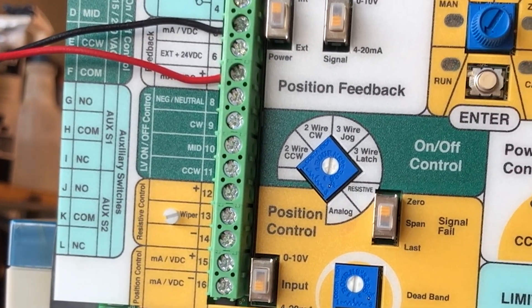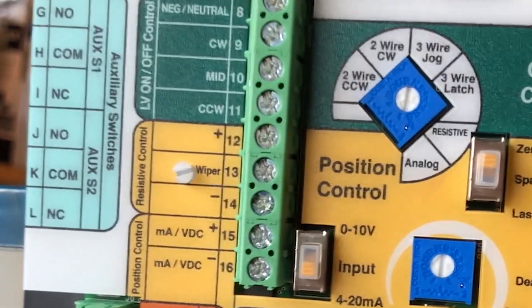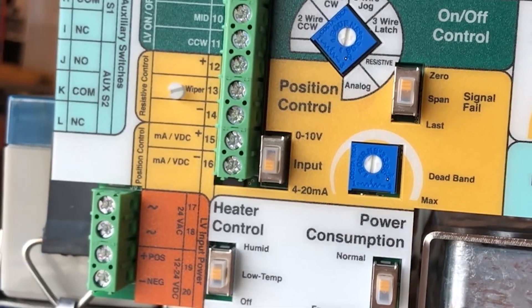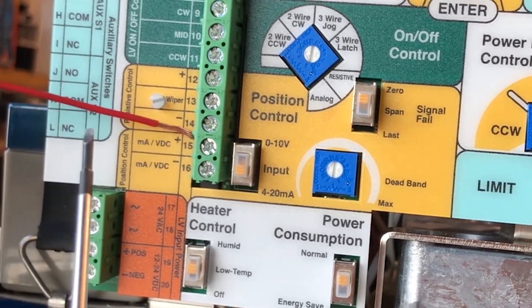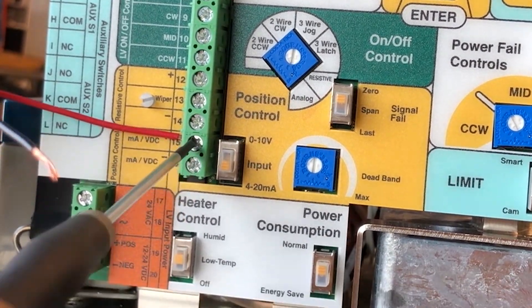Next we're going to wire in our milliamp signal for position control for the actuator and that's going to be terminals 15 and 16. 15 being positive, 16 being negative. This is our 4 to 20 milliamp signal.